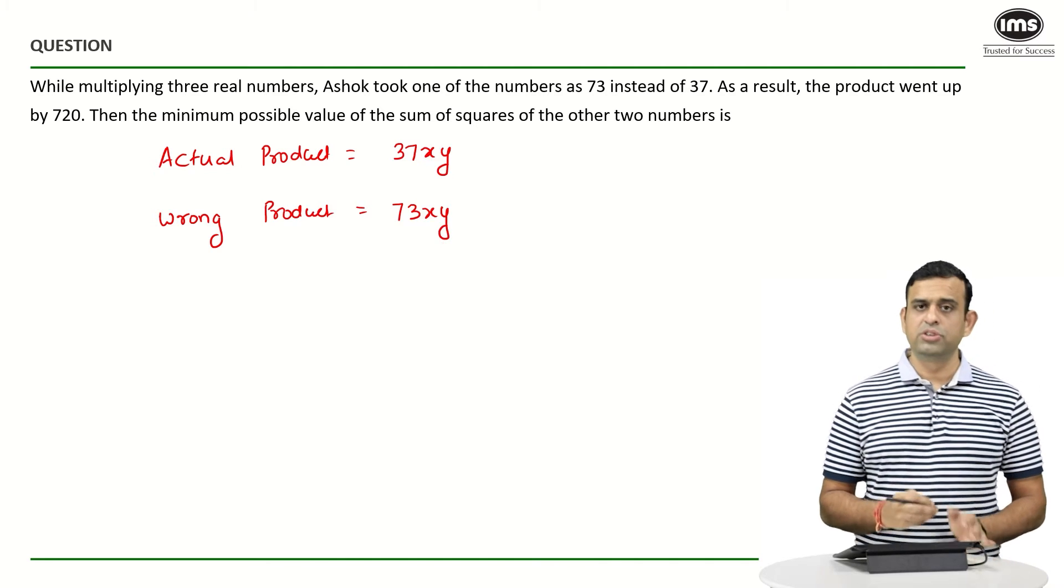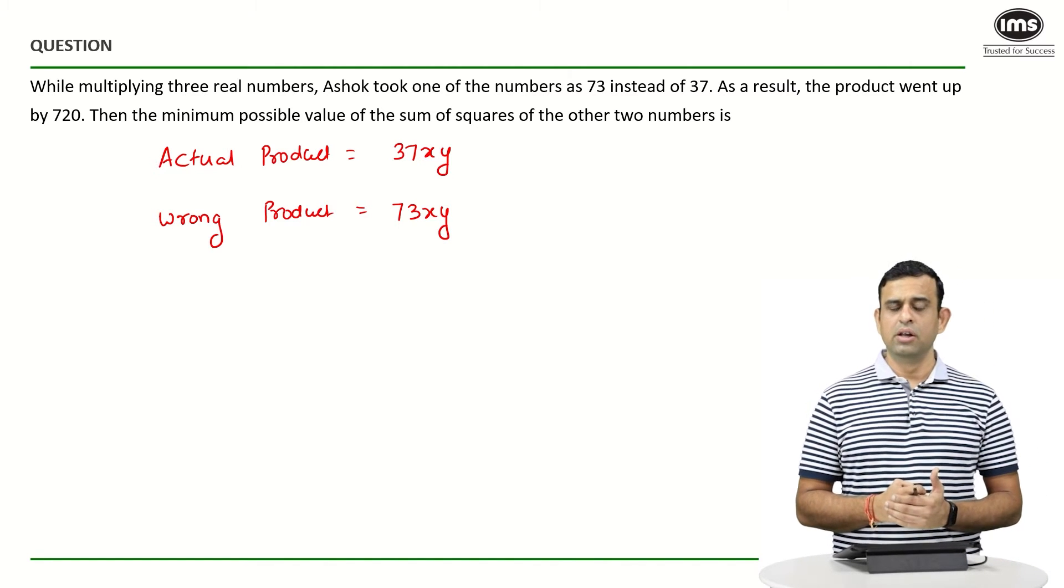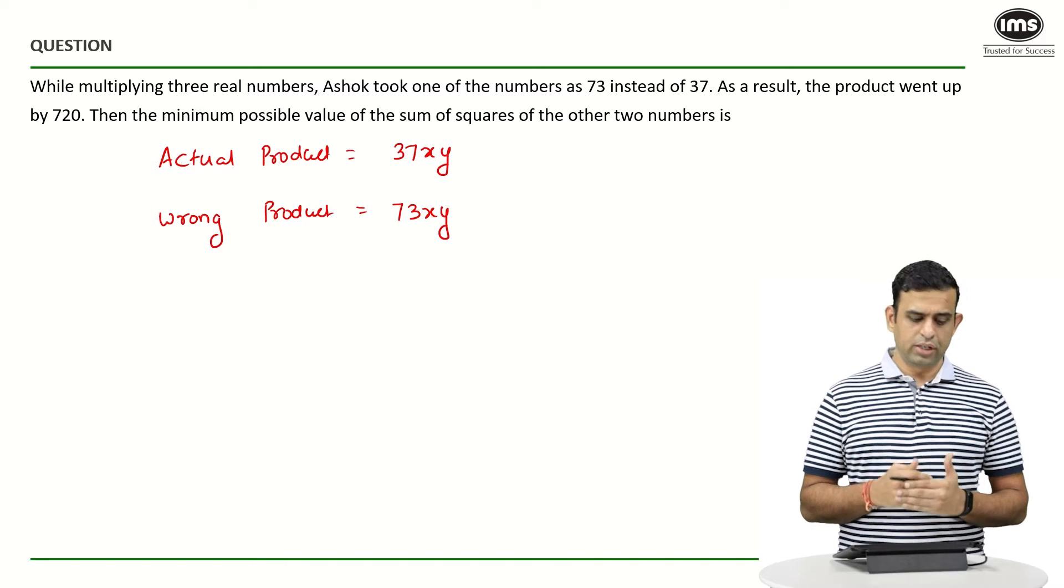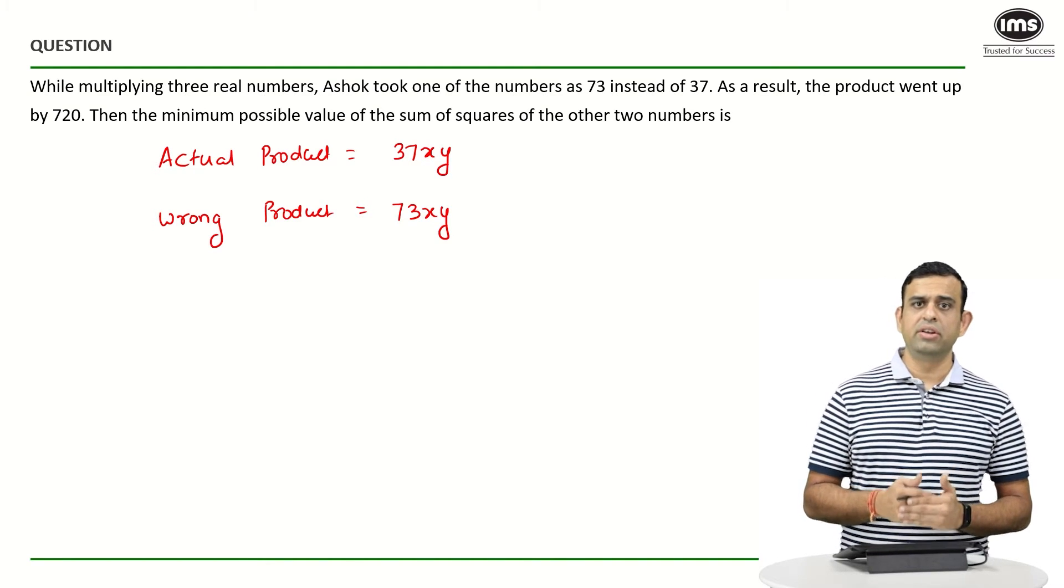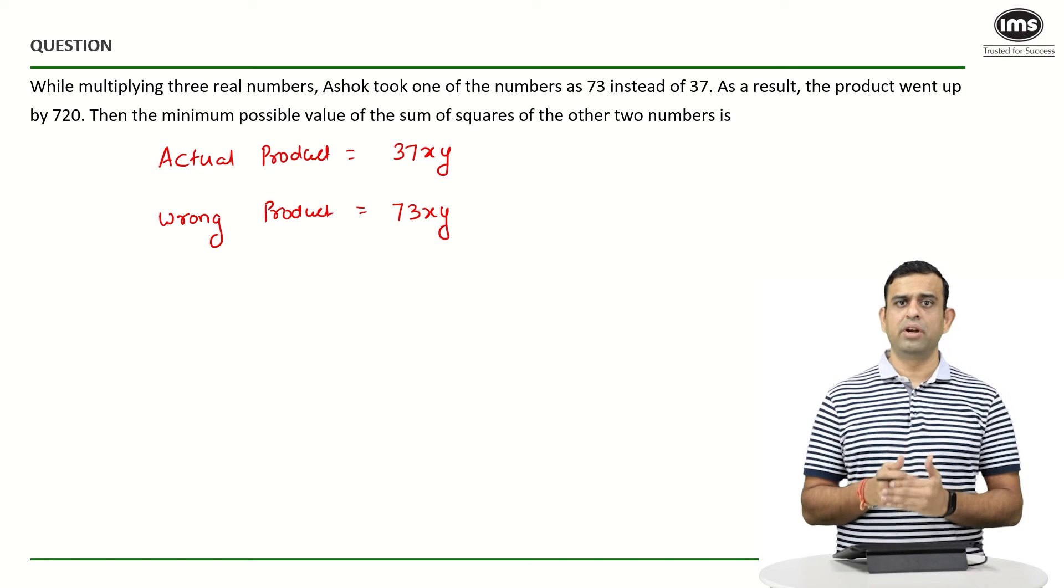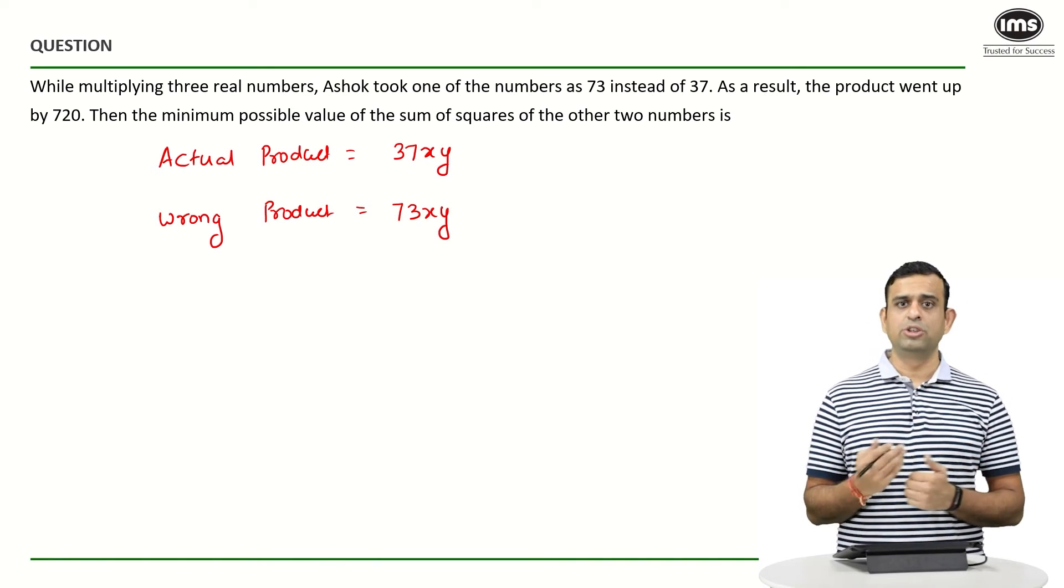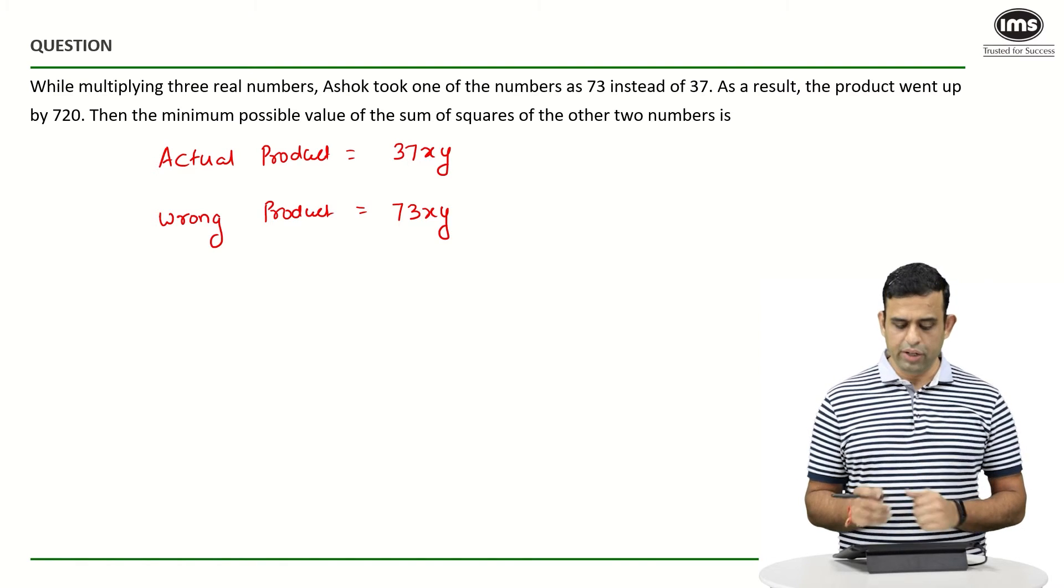So it must be equal to 73 times xy. Now if you look at here, what does the number 720 represent? Because I have taken the number 73 instead of 37, definitely my answer is going to be slightly larger than what I should actually get.